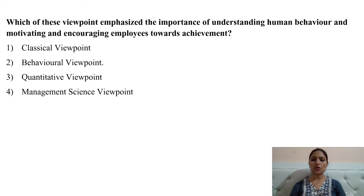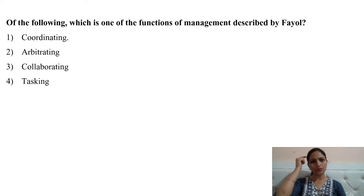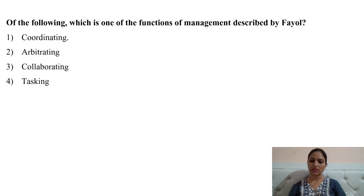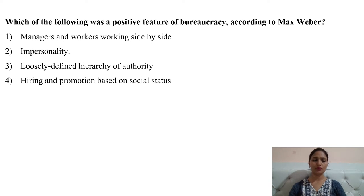Next question: which one of the following functions of management was described by Fayol? Options are: coordinating, arbitrating, collaborating, and tasking. The right answer for this question is coordinating — coordinating was the management function described by Henry Fayol.